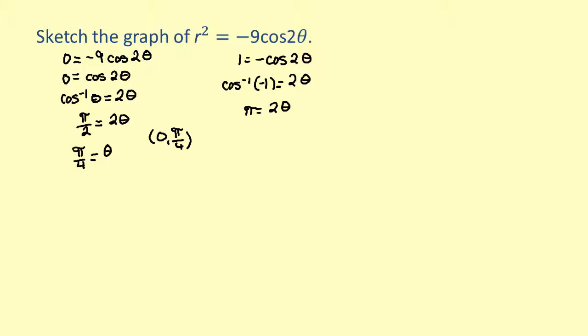Solving for theta, we get theta equals pi over 2. Let's find the corresponding value of r. We need to substitute pi over 2 for theta in the original equation. So we get r squared equals negative 9 times negative 1.